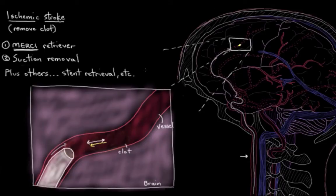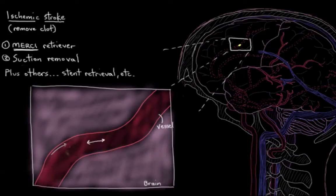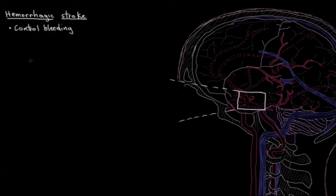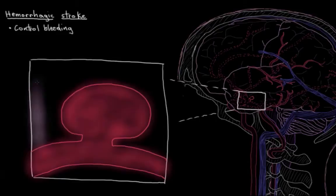Those two we just talked about are treatments for ischemic strokes. But if a surgeon is treating a hemorrhagic stroke, where one of the major goals is to control bleeding, they might do some different procedures.